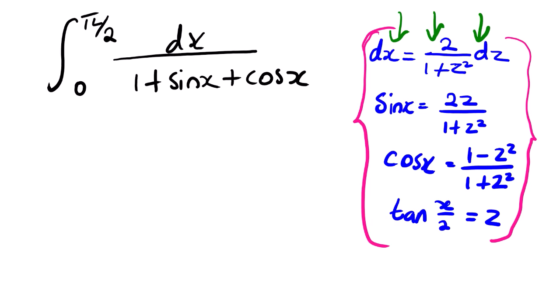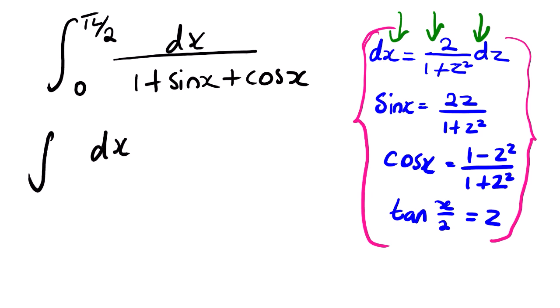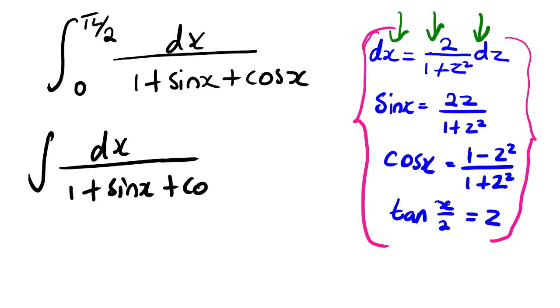Now, we need to find the integral of this using Z-substitution. We can see that our answer will be a definite answer — a certain value — because we have boundaries here. For now, we are just going to find the integral before we substitute our boundaries. We can see that we have three substitutions to perform: dx, sin x, and cos x.